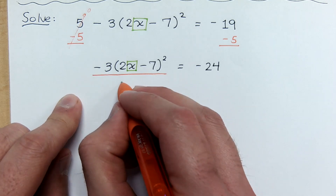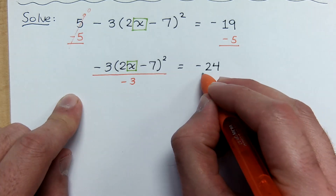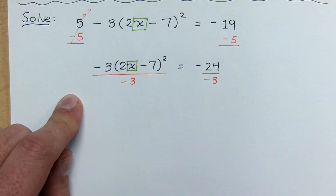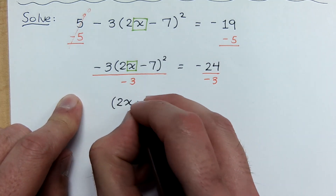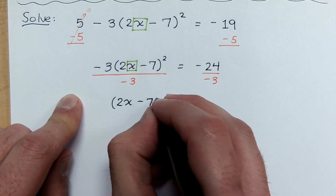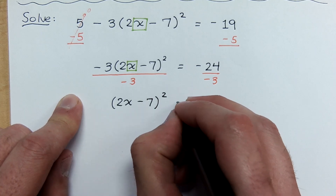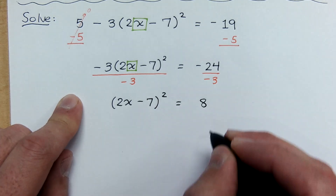So divide both sides by that coefficient of negative 3. And now I have the quantity 2X minus 7 squared is equal to positive 8.